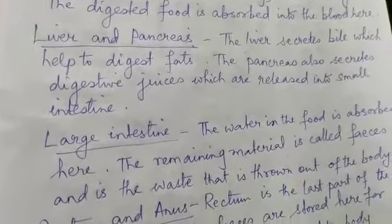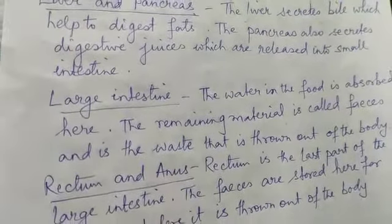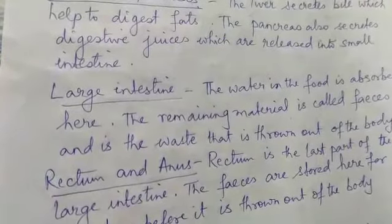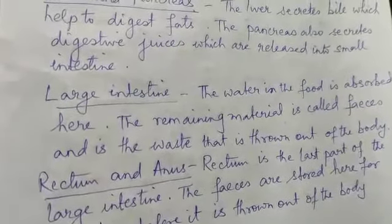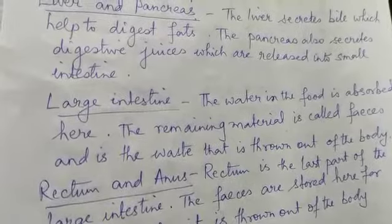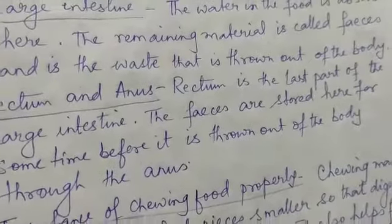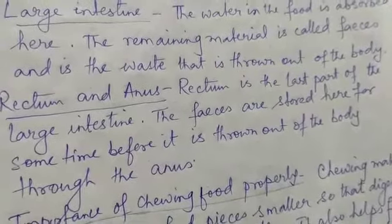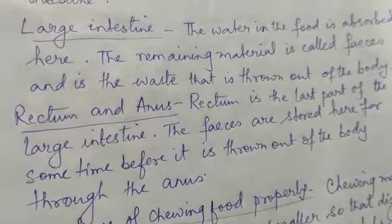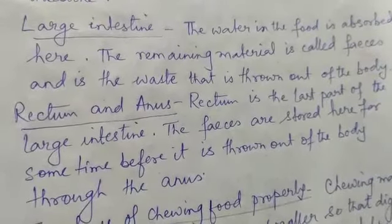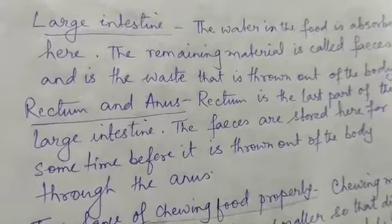Next is the large intestine: the water in the food is absorbed here. After the water is absorbed, the remaining material is called feces — it is the waste that is thrown out of the body. After the nutrients are absorbed, whatever remains that cannot be absorbed is thrown out as feces. The rectum is the last part of the large intestine where feces are stored for some time before being thrown out of the body through the anus.